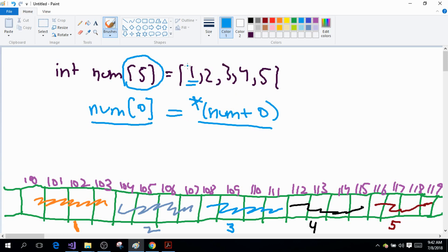Which is 1, because I'm using the dereferencing operator. So this will give me the value 1. Similarly, if I write num with an index 1, what will happen?